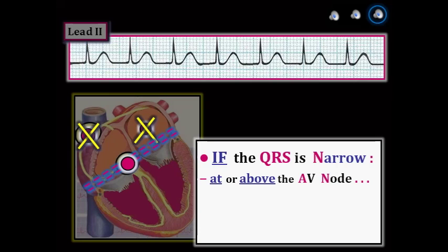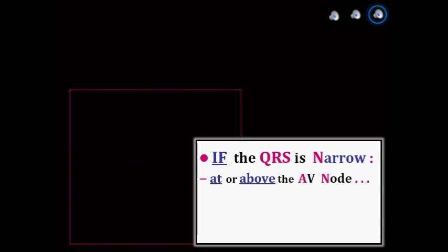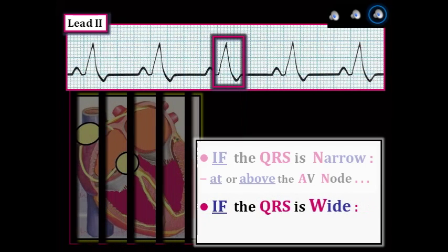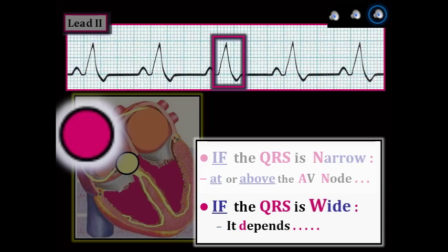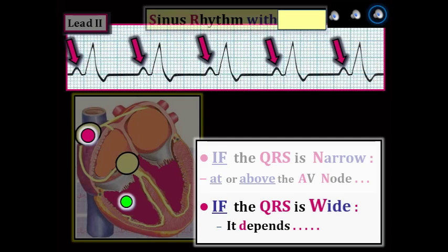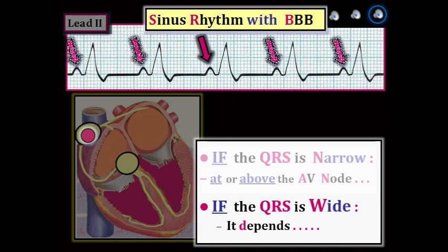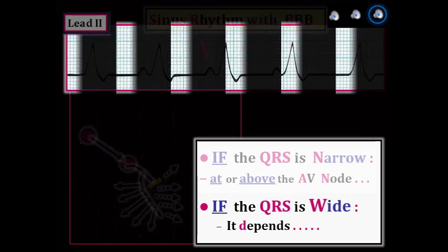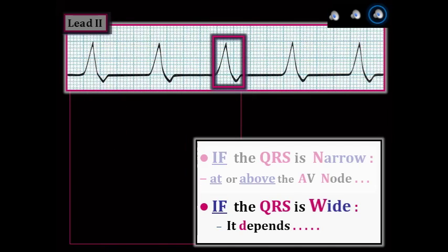However, the opposite is not necessarily true — a wide QRS does not reliably tell us where the impulse originates. For example, a wide QRS with visible sinus P waves indicates sinus rhythm with QRS widening due to bundle branch block. The impulse originates from the sinus node and travels normally until it encounters the blocked part of the ventricular conduction system. In contrast, a wide QRS with no P waves defines the rhythm as originating from the ventricles.